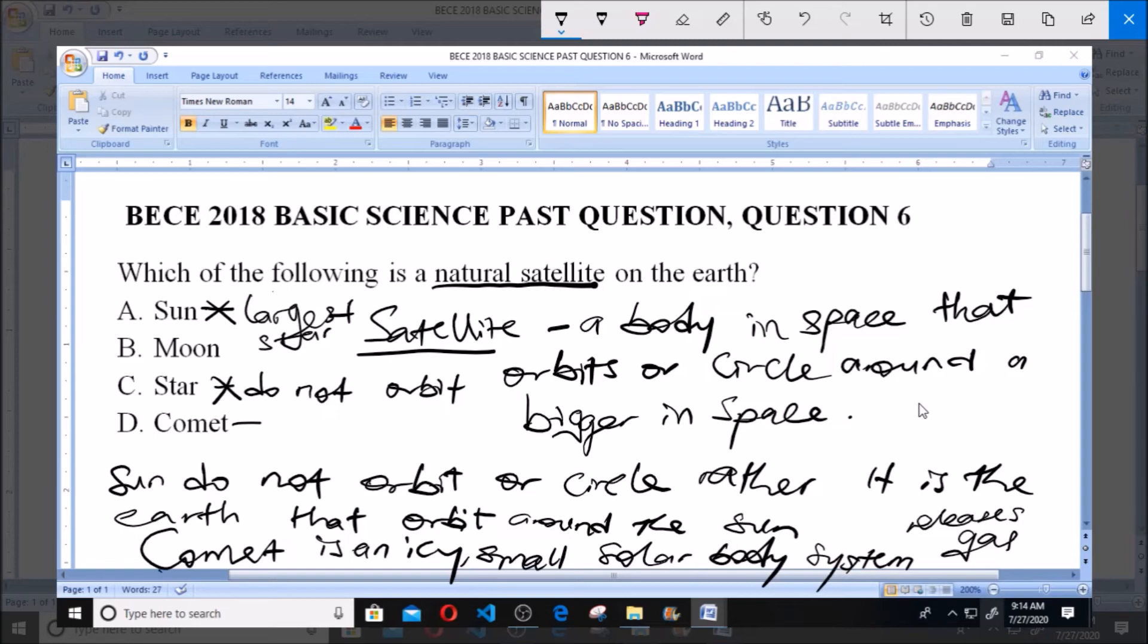So comet is just an icy small solar body system. It does not orbit around the earth. And like we say, a satellite is a body in space that orbits or circles around a bigger body in space.